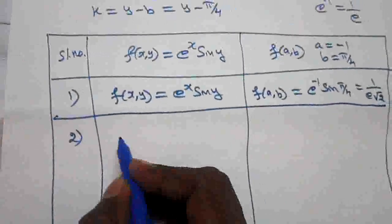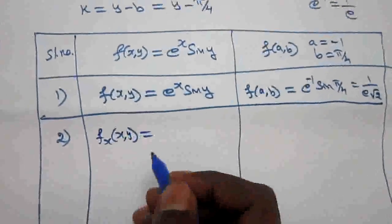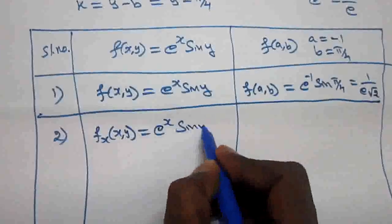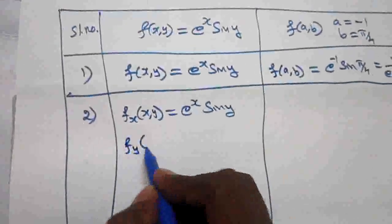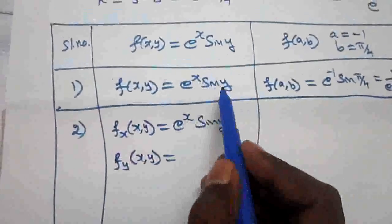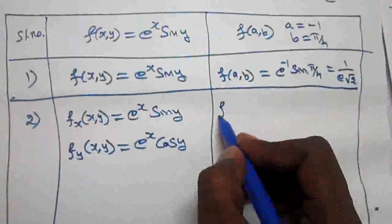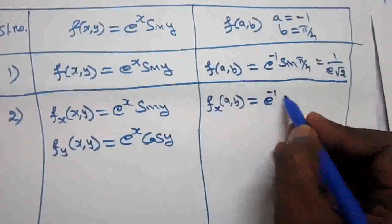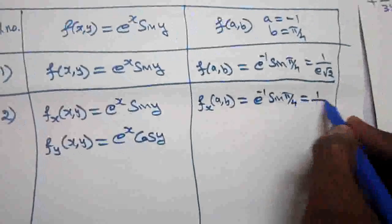Next, the first derivatives. Differentiating partially with respect to x: fx(x,y) = e^x · sin(y). Differentiating with respect to y: fy(x,y) = e^x · cos(y). Evaluating at (a,b) = (−1, π/4): fx(a,b) = e^(−1) · sin(π/4) = 1/(e√2), and fy(a,b) = e^(−1) · cos(π/4) = 1/(e√2).